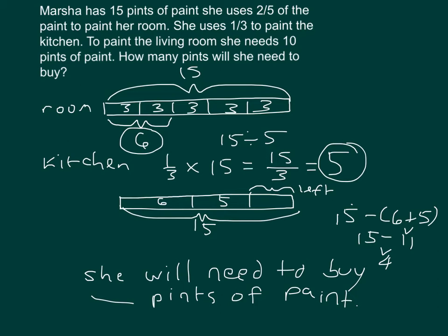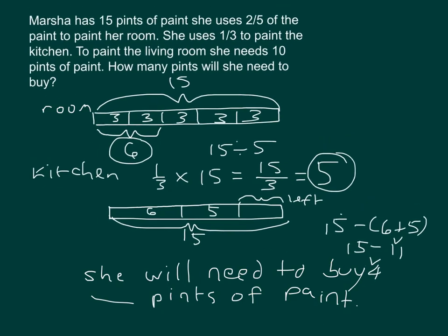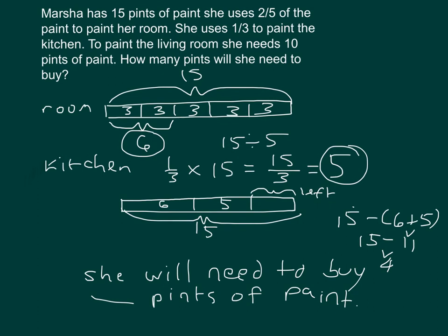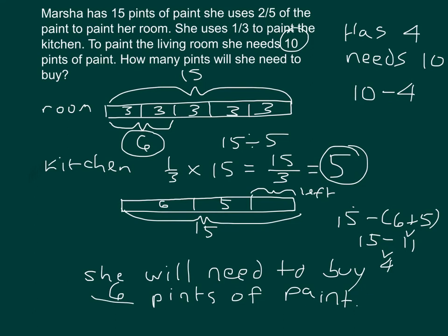I'm not done though — I can't just write she will need to buy four pints of paint. Since she has four left but needs ten, I need to find the difference. We subtract the smaller from the larger: ten minus four is six. She will need to buy six pints of paint.